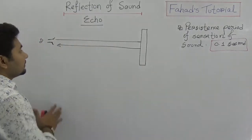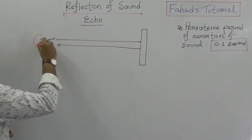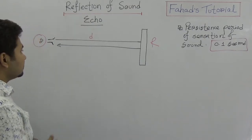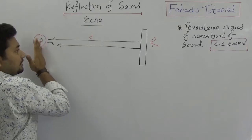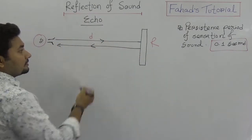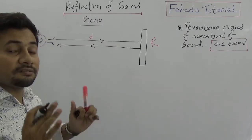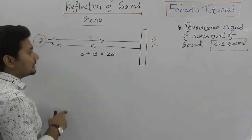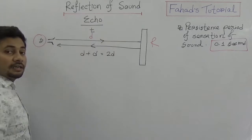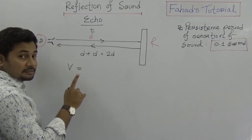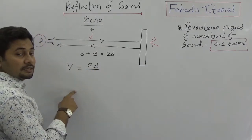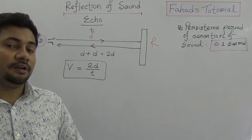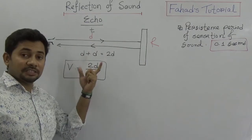Why is distance important? Consider a source and a reflector. The distance between them is d, so sound traverses once in that direction and again in the reverse direction — the total distance traversed is d plus d, which is 2d. If the time taken is t, then velocity equals 2d divided by t. That is why we need to consider 2d when dealing with the reflection of sound.